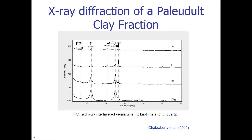Now we look at the x-ray diffraction of a paleudult clay fraction. Just look at the difference: the A horizon contains materials such as hydroxy interlayered vermiculite, kaolinite, and quartz. Whereas quartz was the only material noticed in the spodosol A horizons, the paleudult A horizon is notably more mineralogically complex.